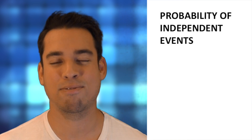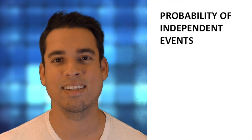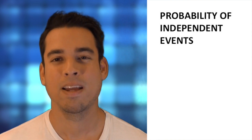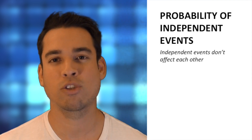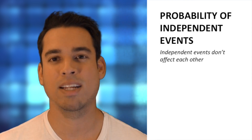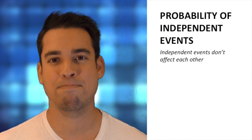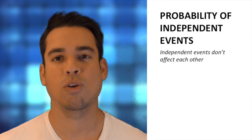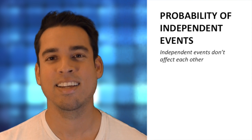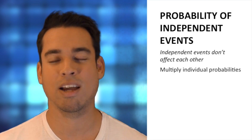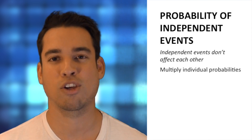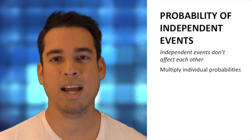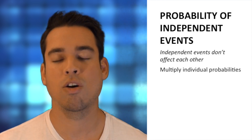Now let's talk about the probability of independent events. Independent events are events that do not affect each other. To calculate the probability of two independent events both occurring, you simply multiply the probability of each event together. Let's go back to the dice example.